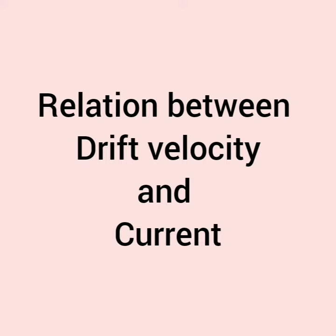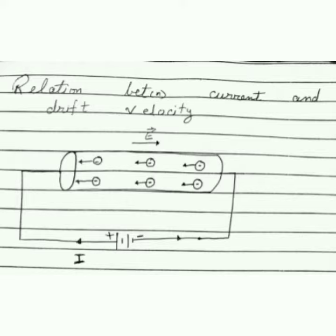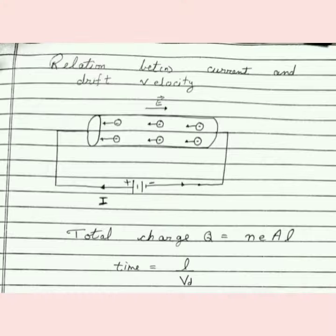In this video we are going to derive the relation between drift velocity and current. To derive the relation, we will take a cylindrical wire which is connected with a battery. External electric field E vector is supplied with the help of the battery, and electrons will drift in the opposite direction of the external electric field.